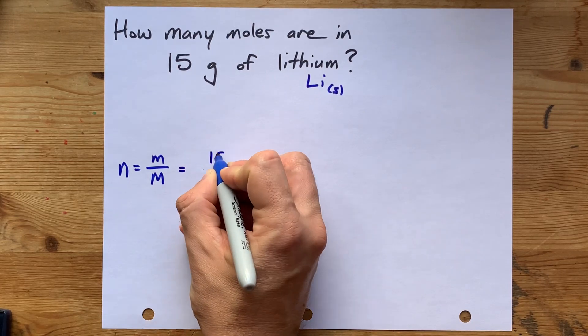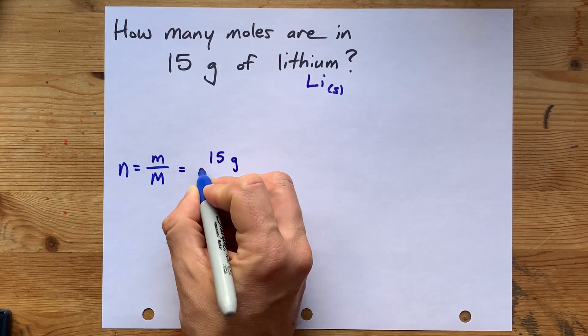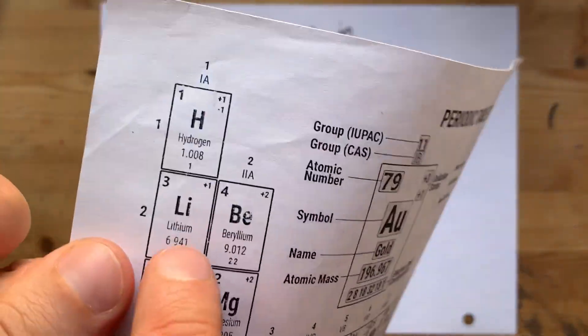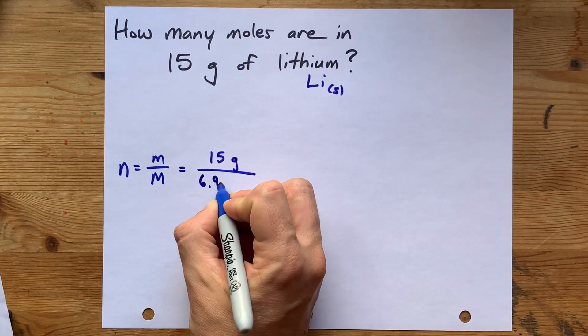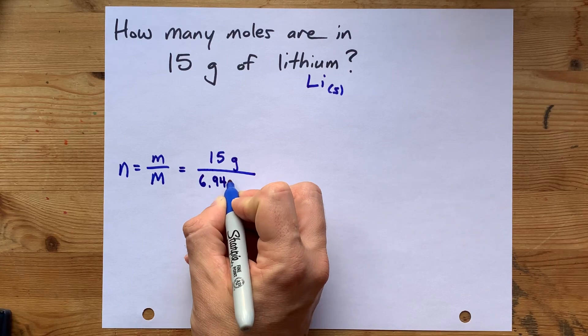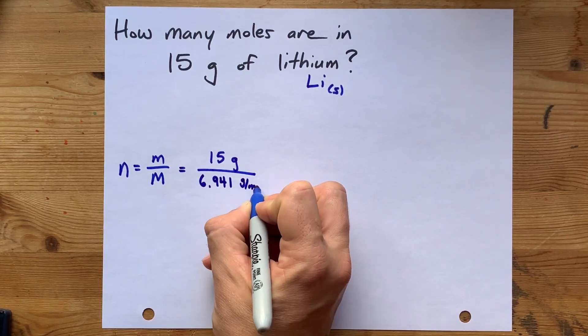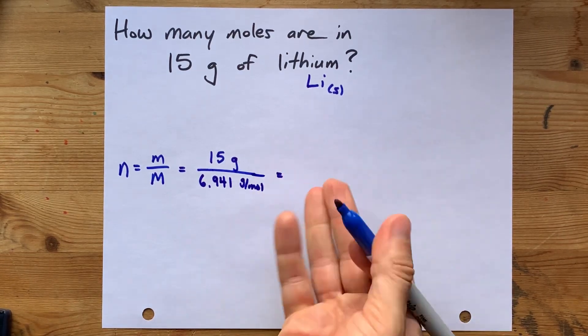I'm going to take the number of grams and I'm going to divide it by the molar mass of lithium, which is actually the atomic mass of lithium, 6.941. And once I do this calculation, I should be done.